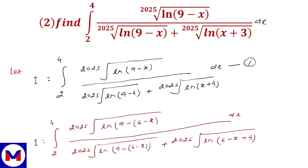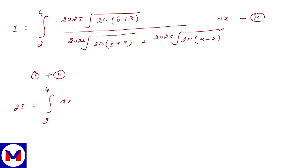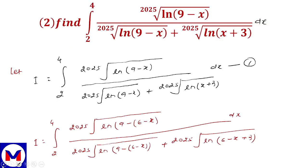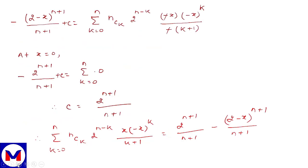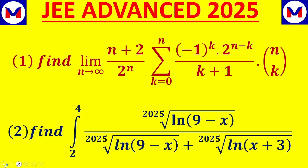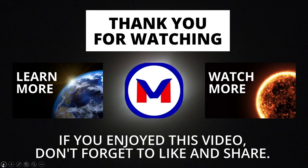Adding equation 1 and 2, we get 2I equal to integral from 2 to 4: the numerator and denominator are both the same — 2025th root of ln(3 plus x) and ln(9 minus x) — so they cancel, giving simply dx. This becomes x from 2 to 4, which is 4 minus 2 equals 2, and the value of I is equal to 1. Very easy question — just 2025 as the hook — and hope you understood it well. Best of luck for your upcoming examination. Thank you for watching; if you enjoyed this video don't forget to like, share and subscribe the channel. Thank you.